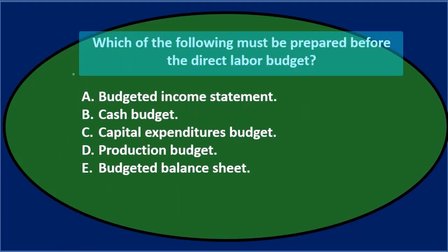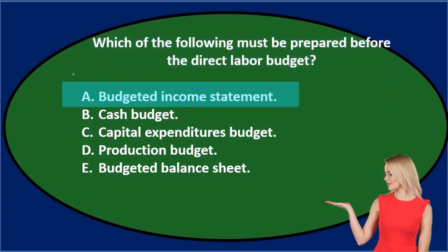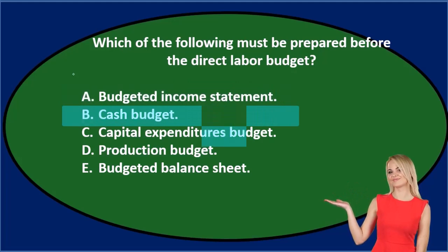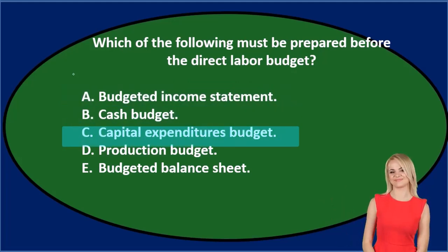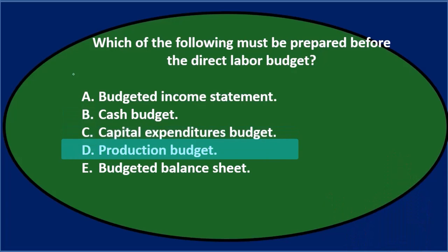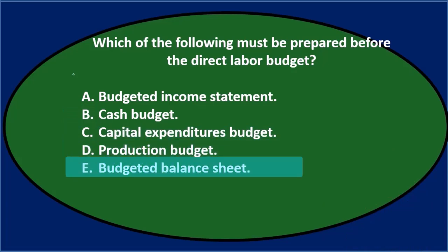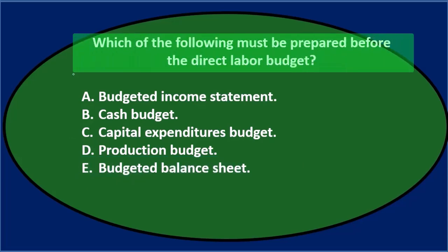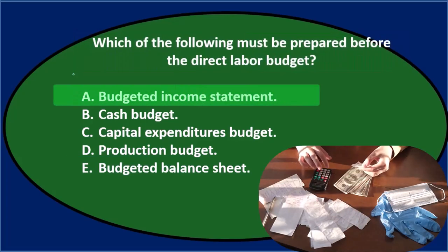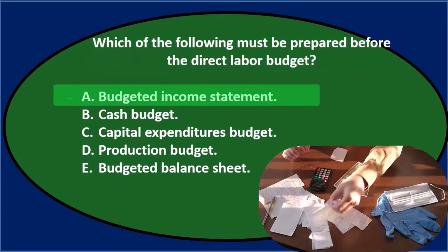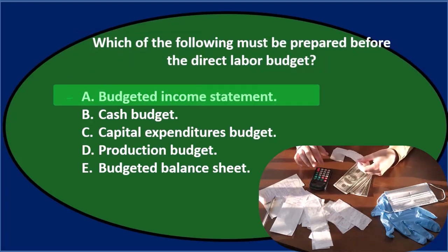Next question: which of the following must be prepared before the direct labor budget? A: budgeted income statement, B: cash budget, C: capital expenditures budget, D: production budget, or E: budgeted balance sheet? Let's go through this using the process of elimination.